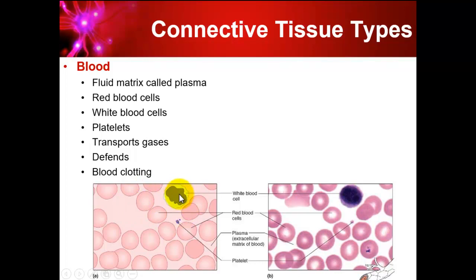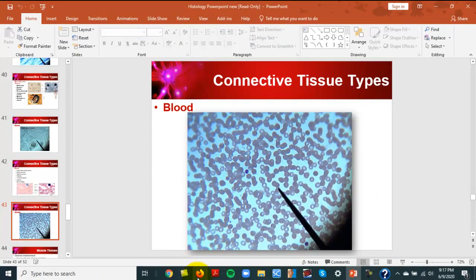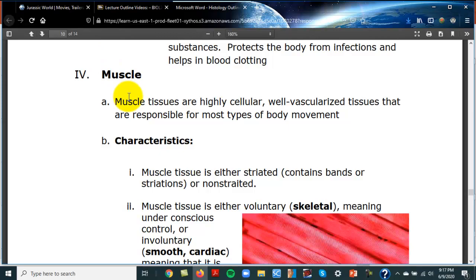Blood is easy to identify on a slide. There are leukocytes (white blood cells), erythrocytes (red blood cells), and platelets. In the real slide, the small dots are likely platelets, the darker cells are white blood cells, and the majority are red blood cells. Blood transports gases, aids immunity, and assists with blood clotting.